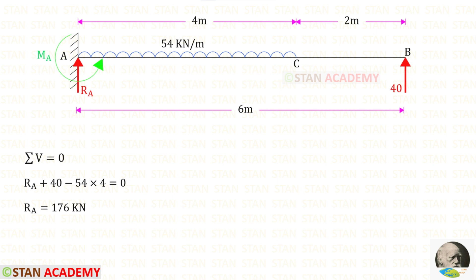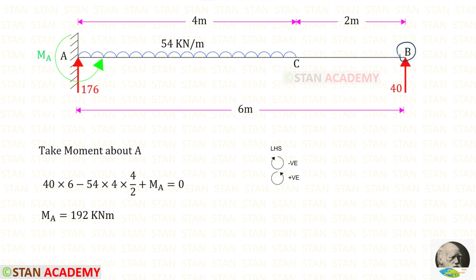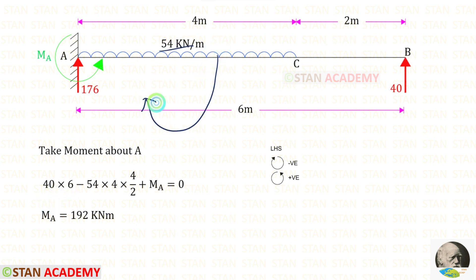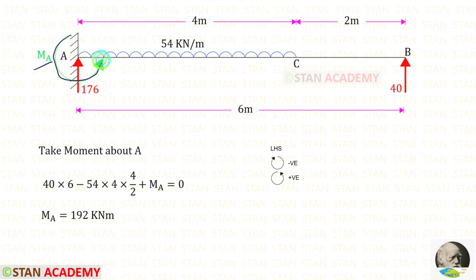Now let us apply the rule sigma V equals 0 and find RA. Now from point B, let us take moment about A and find the moment. MA is acting in the anticlockwise direction so it will be positive, and the distance is 6, so 40 into 6. The uniformly distributed load is acting in the clockwise direction so it will be negative. With the UDL, we multiply the distance and then divide by 2. Let us assume MA is acting in the anticlockwise direction so it will be positive. For MA, we will get a positive value, meaning our assumption is correct — it is acting in the anticlockwise direction.